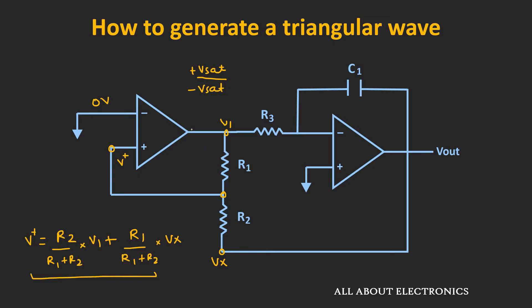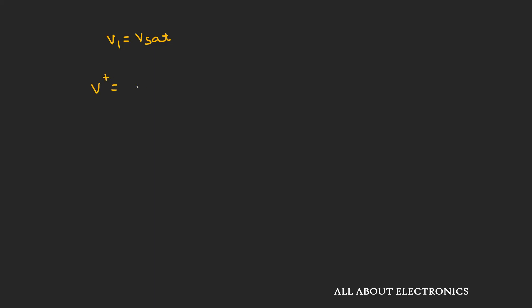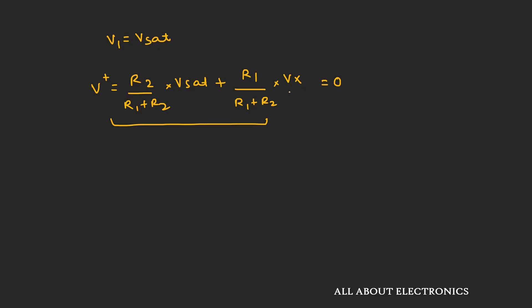Let's assume the output of the Schmitt Trigger is equal to positive saturation voltage and find the value of Vx. If we assume V1 equals V_set, then V+ = (R2 / (R1 + R2)) × V_set + (R1 / (R1 + R2)) × Vx. Setting this expression equal to zero — because whenever V+ becomes zero there is a transition — and solving for Vx, we get Vx = −(R2 / R1) × V_set. This is one of the threshold voltages that decides the Schmitt Trigger output.